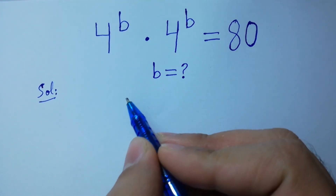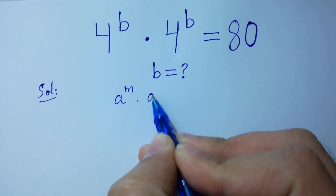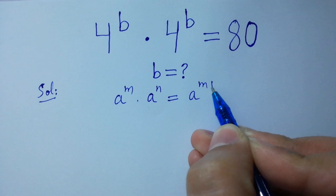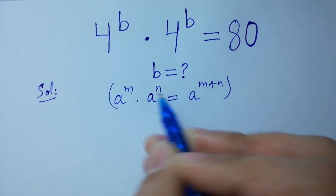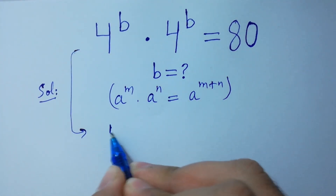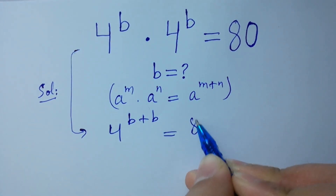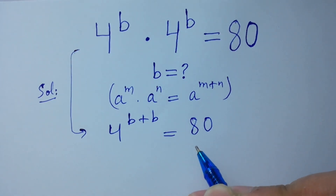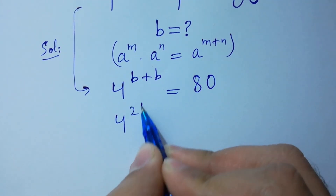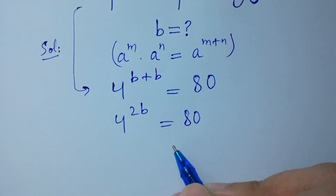As we know that a to the power m times a to the power n equals a to the power m plus n. So it will be equal to 4 to the power B plus B equals 80. Therefore, 4 to the power 2B equals 80. Take log on both sides.